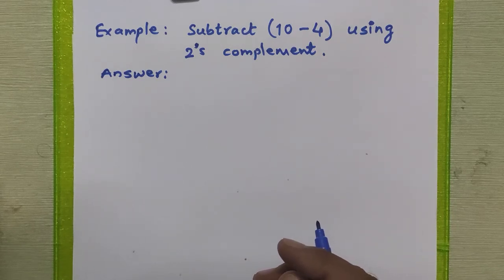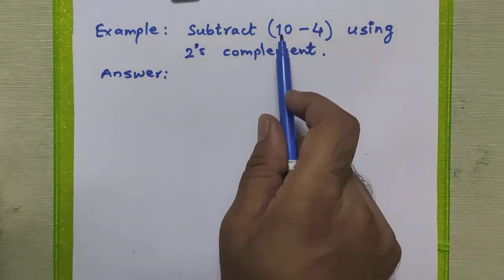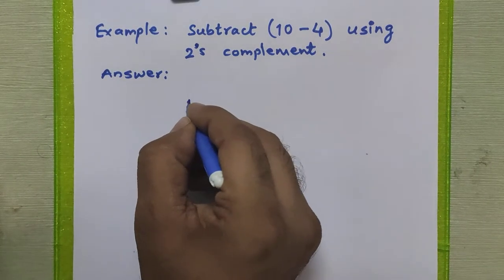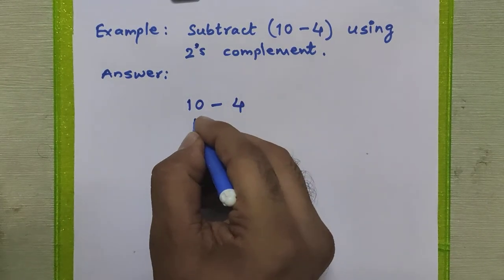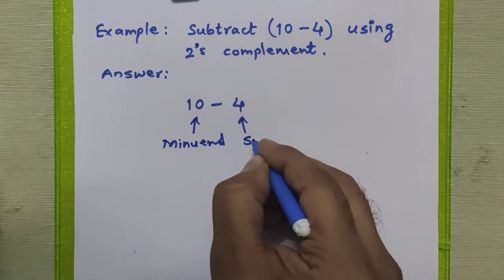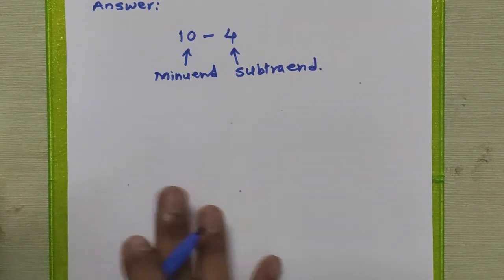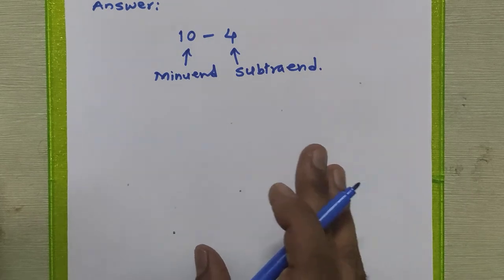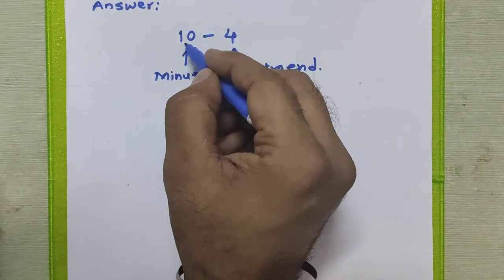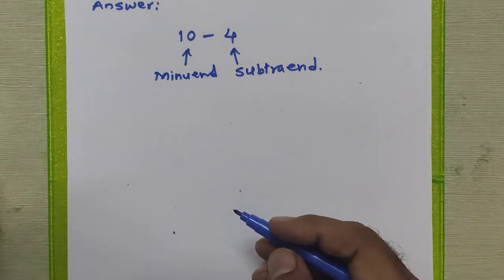Hello everyone, in this tutorial we are going to study the two's complement subtraction method. In this problem we have to perform the subtraction of ten minus four using two's complement. Here, ten is called the minuend whereas four is called the subtrahend. To solve this example, we are going to add the two's complement of the subtrahend to the minuend to get our answer. If there is any carry generated during the process, we will discard or neglect that carry.